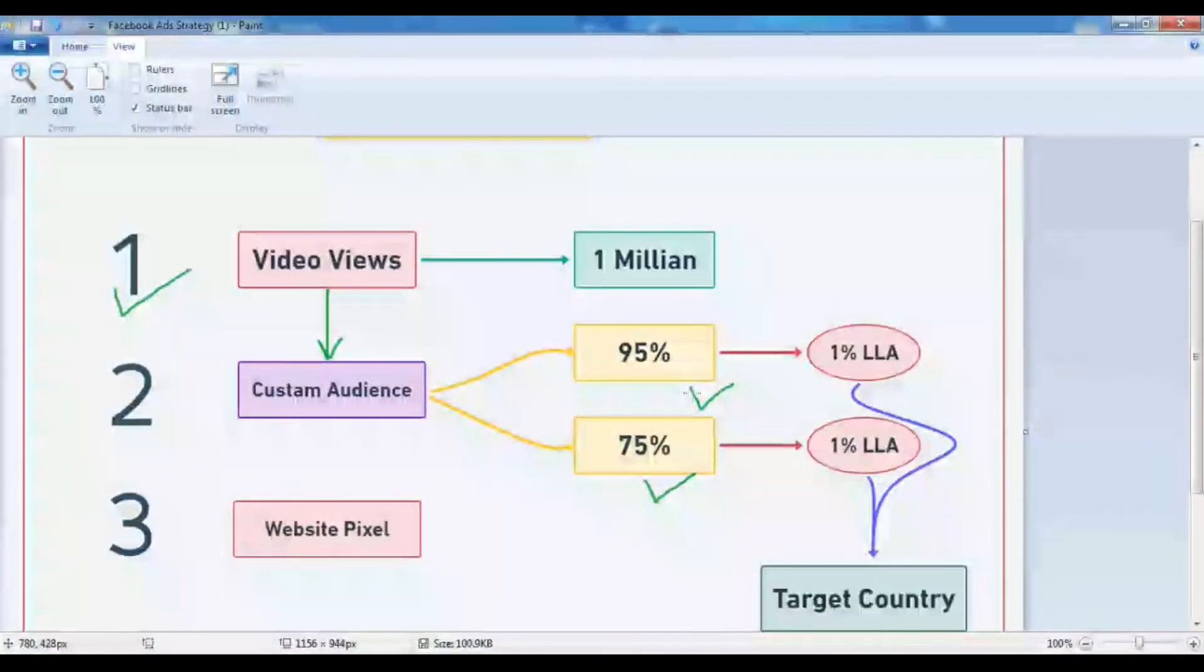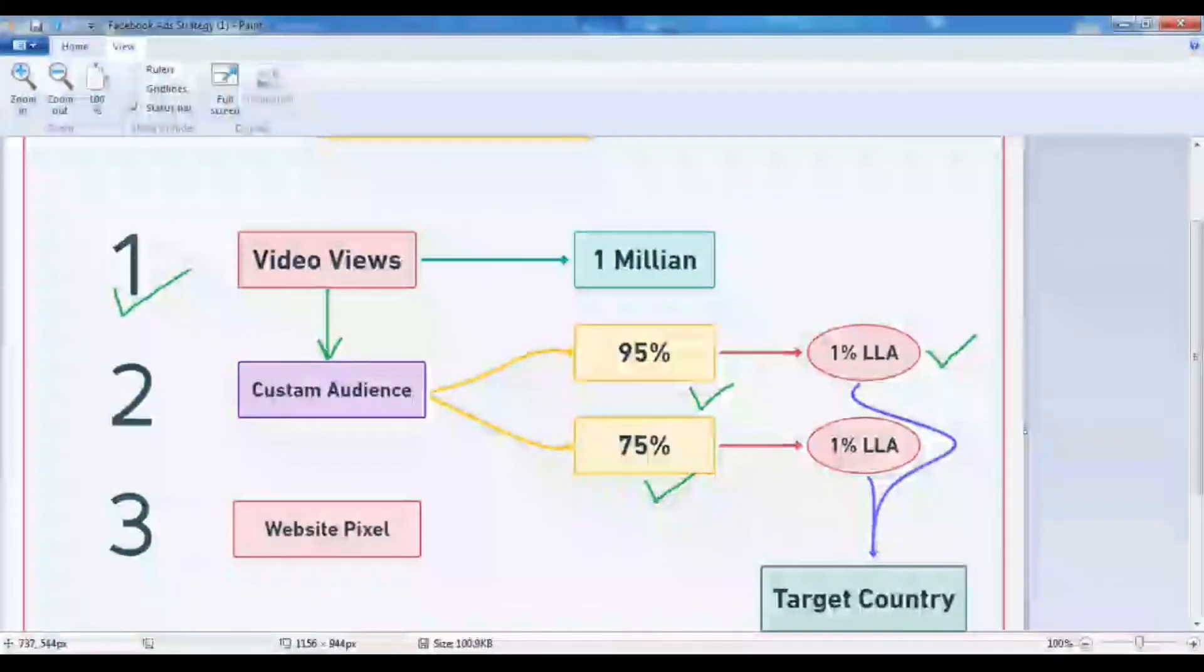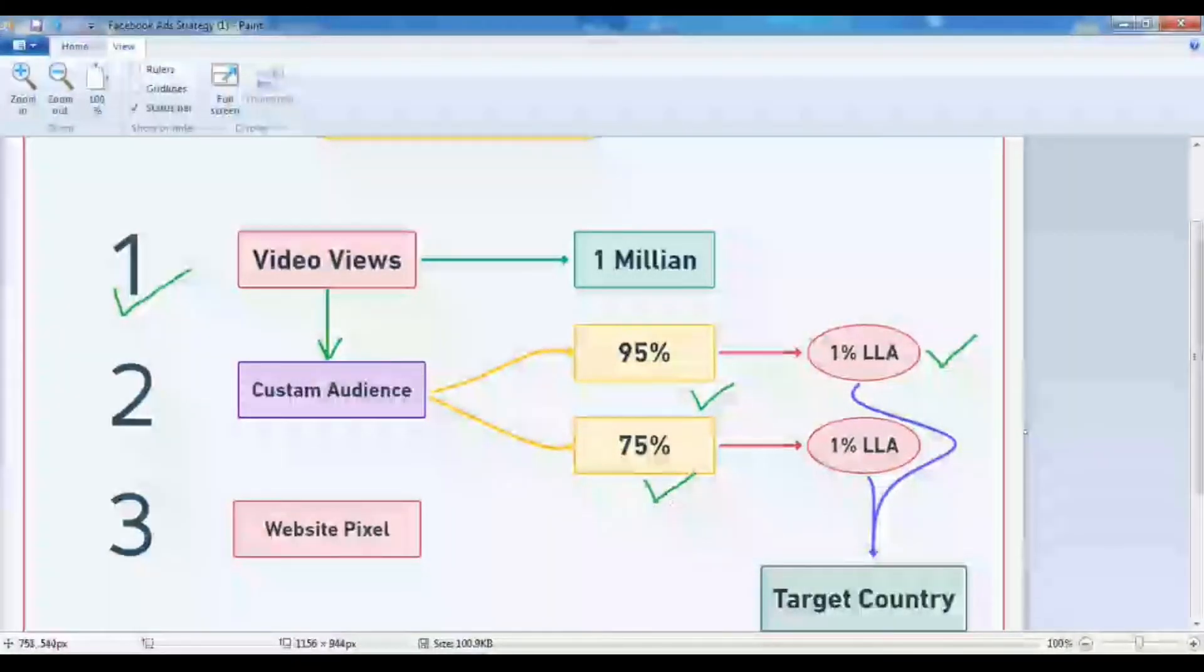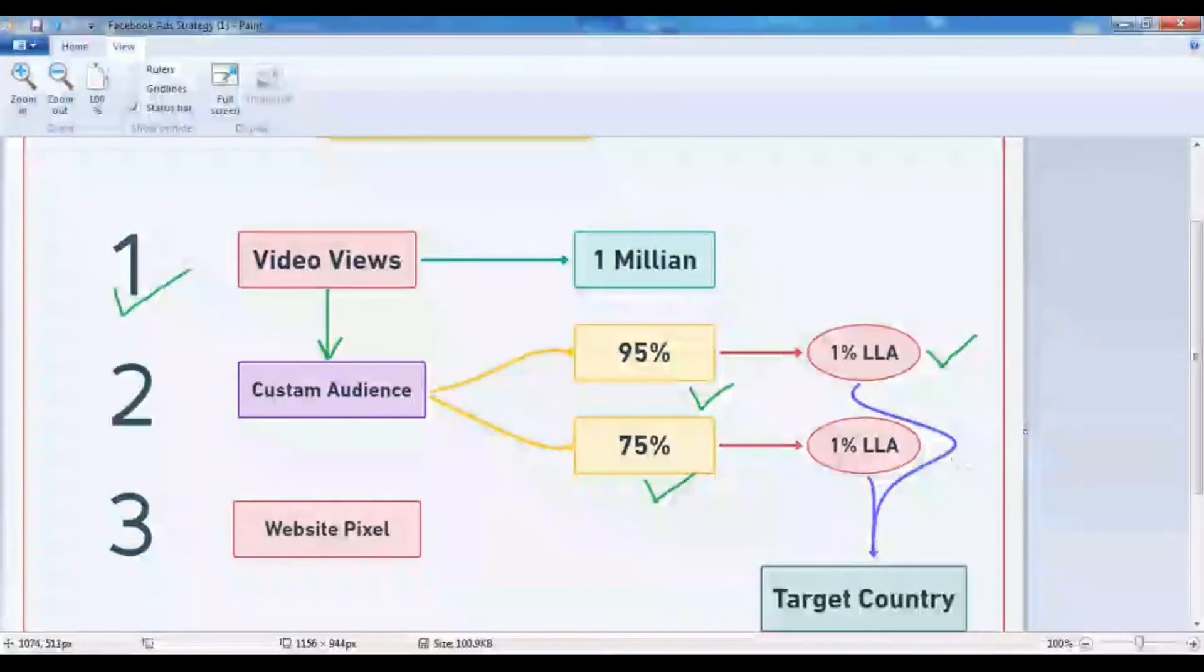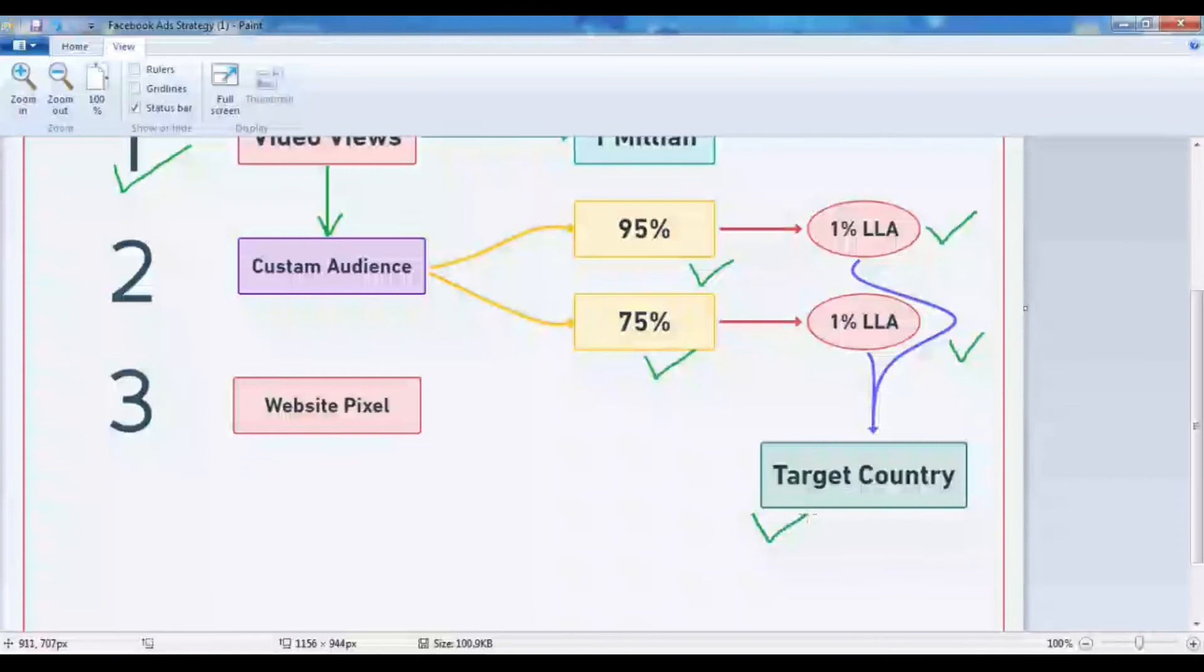Then through this 95% custom audience you will be making 1% lookalike audience. And then through this 75% video views custom audience you will be creating 1% lookalike audience, and both you will be doing for a new target country.